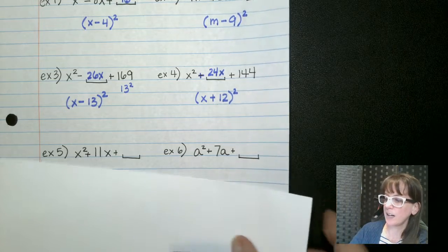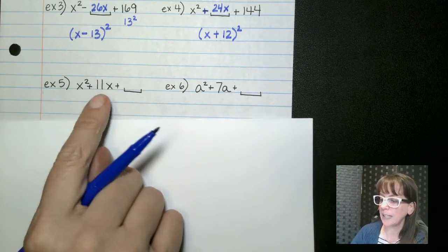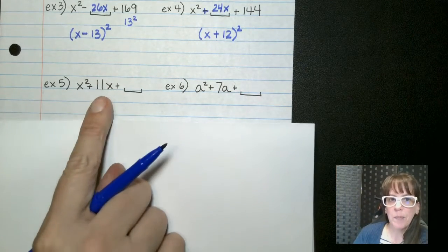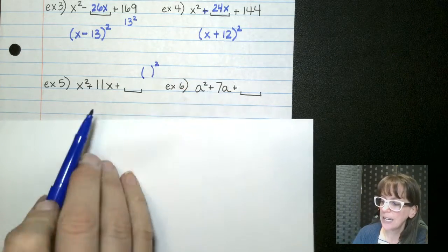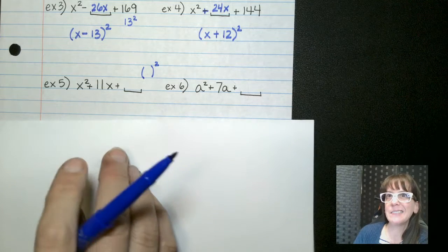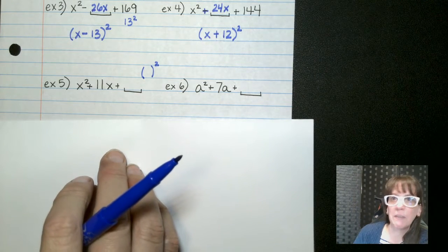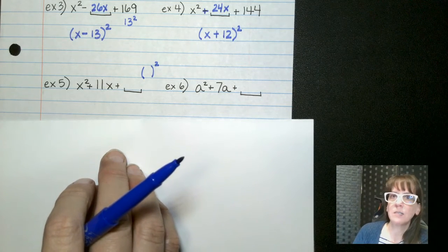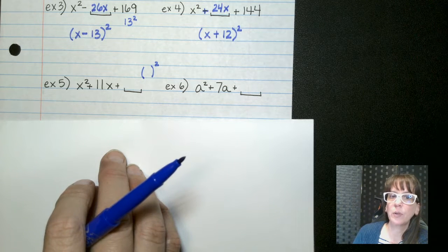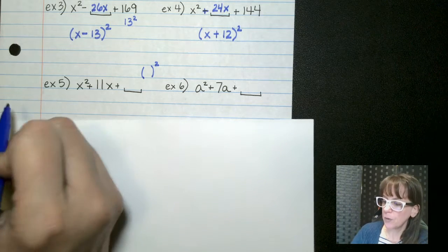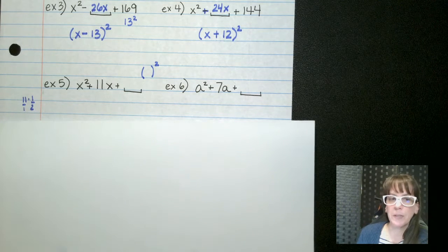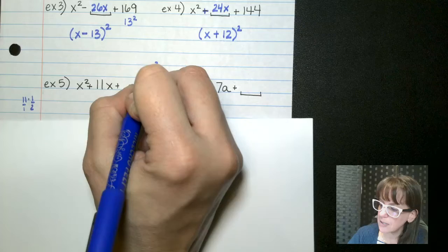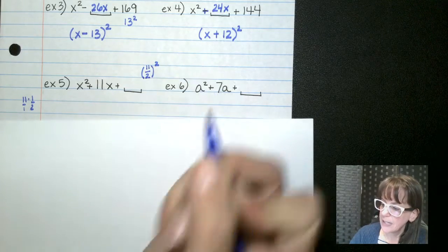All right, let's talk about what happens when it's not a beautiful, perfect, even number, like 11 here. Remember, we need half of this squared. So half of 11 is five and a half, or it's a decimal 5.5, but you don't want a decimal or a mixed number here. You want your improper fraction. So if you have 11 and you multiply that by one half, you can just multiply straight across top, straight across the bottom to give us 11 halves.